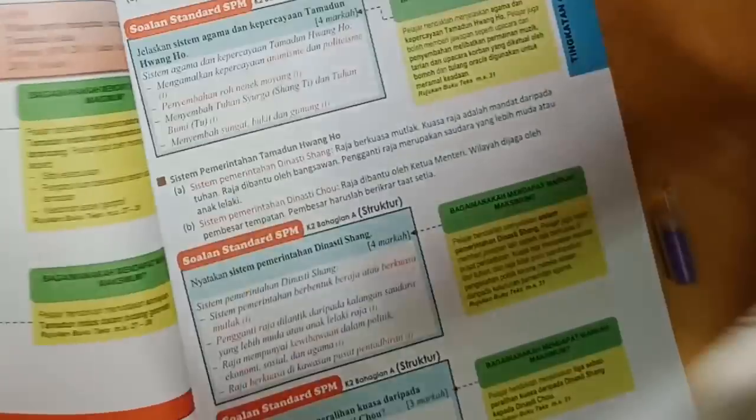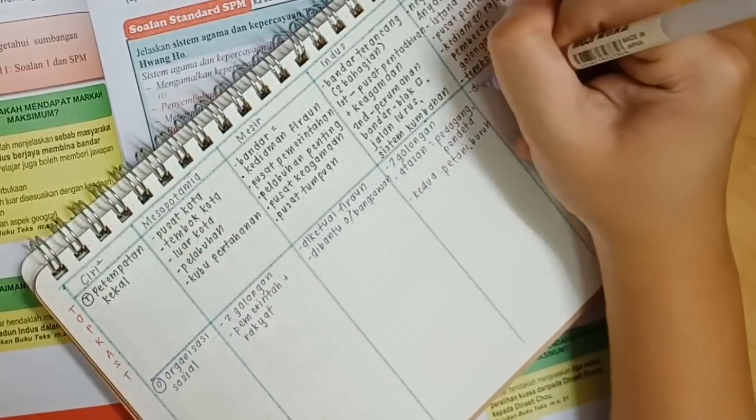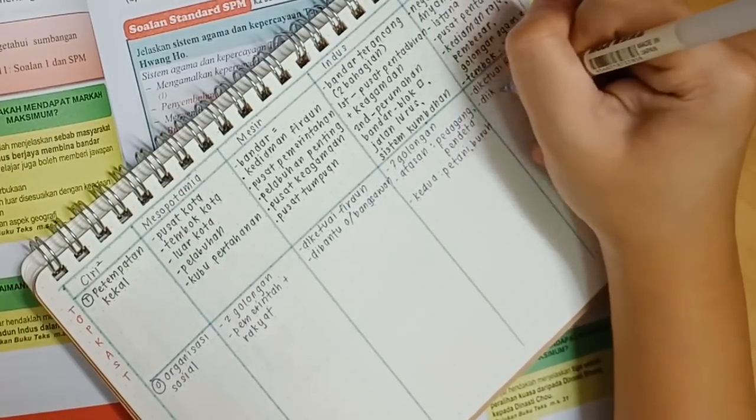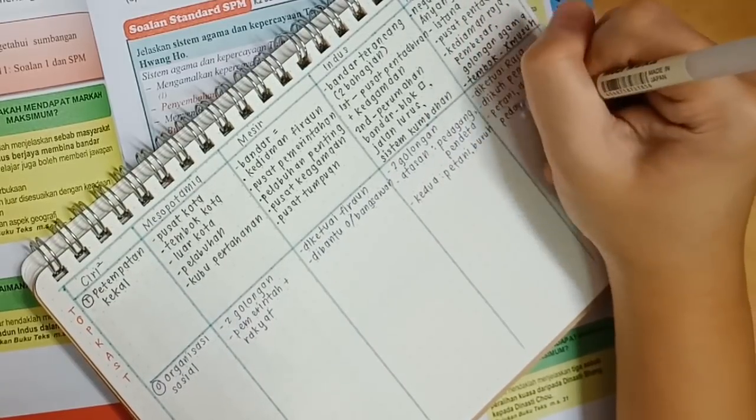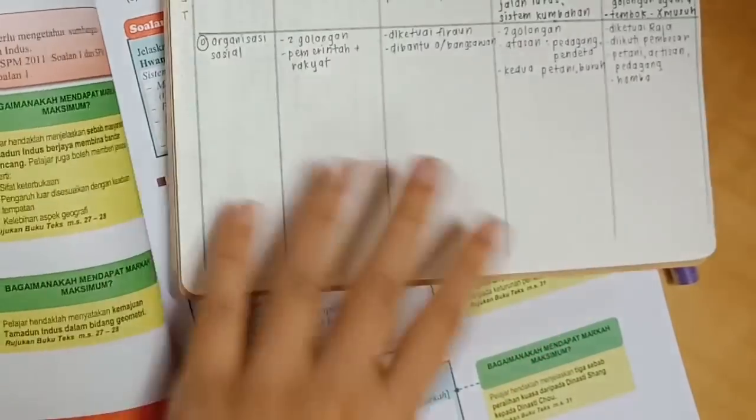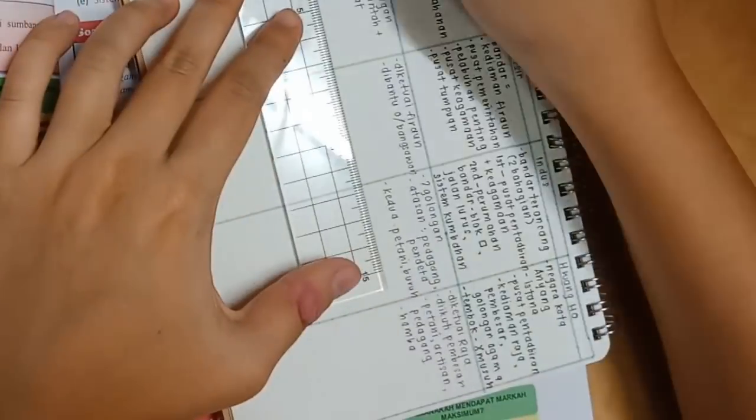And then for Organisasi Social of Mesir, dibantu oleh bangsawan instead of writing Oleh, I like to write a small letter O and just a dash. You can create stuff like that to save yourself some time.